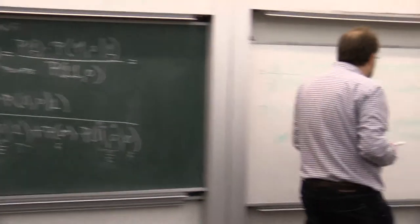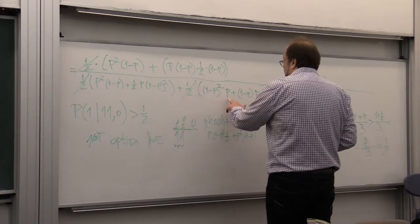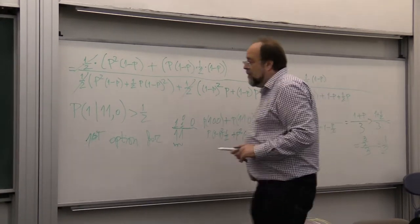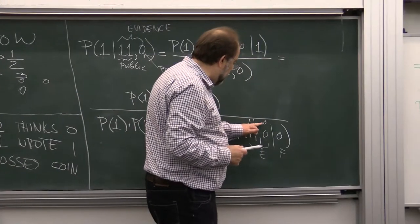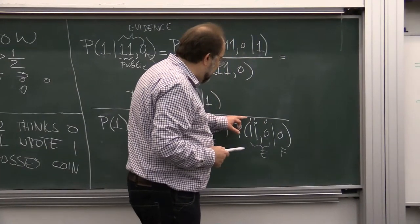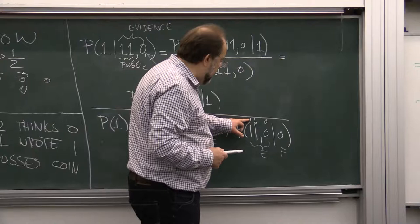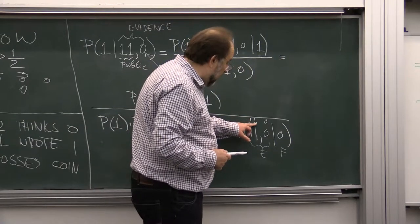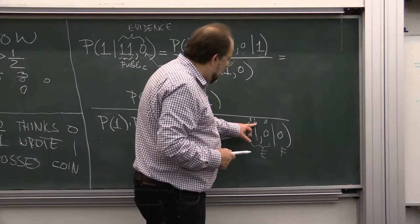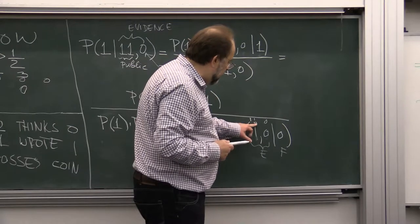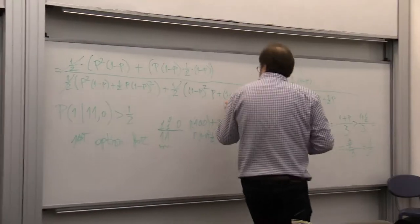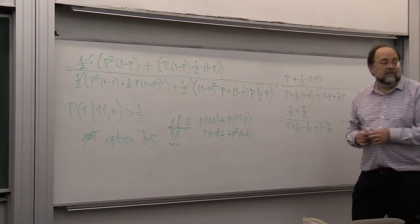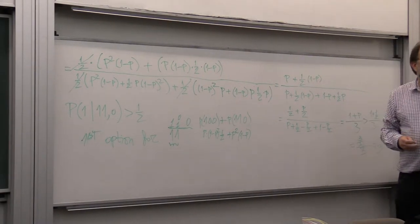In the first case, both of them think one, so it will be, and it's false, so it's one minus P squared times P because this guy thinks correctly. So voila, one minus P squared times P, plus when you have the coin toss is when you have one zero zero.